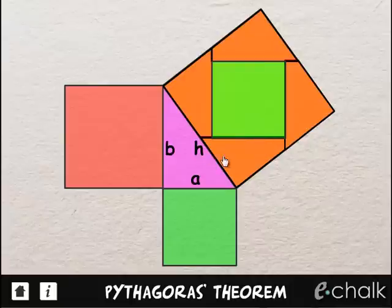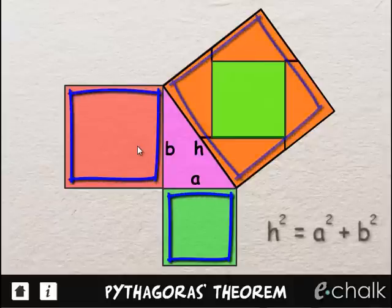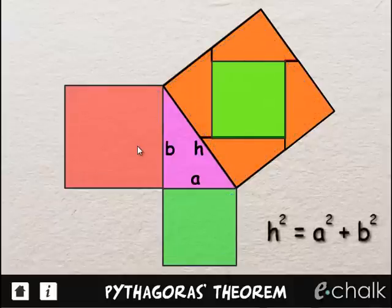So what we've shown here is that the square of the hypotenuse is equal to the sum of the squares of the other two sides. And that's Pythagoras theorem.